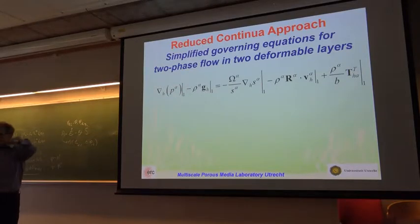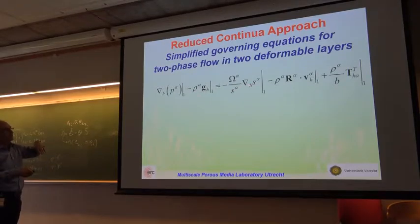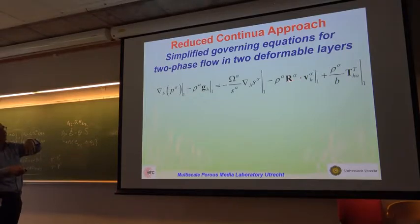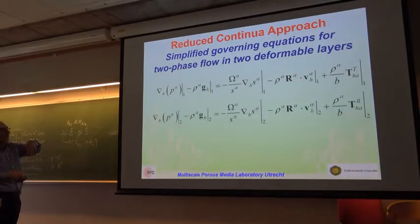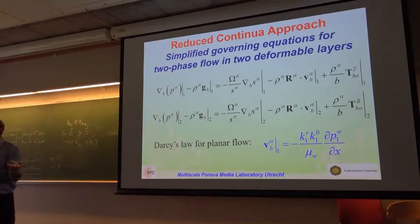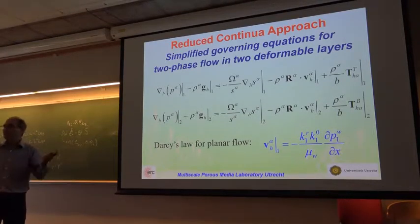Substituting these results into the momentum equation for a layer yields Darcy's law. The pressure gradient is horizontal and planar, with a gravity term and a term related to saturation gradient. Combining these gives the gradient of Gibbs free energy, with the velocity term representing the inverse of permeability. This produces Darcy's law in the horizontal direction—so horizontally, we recover the standard two-phase flow equations.